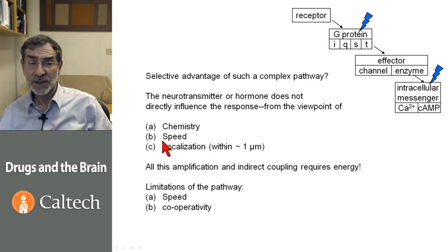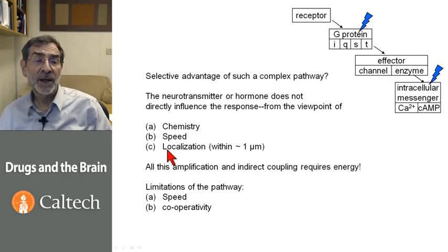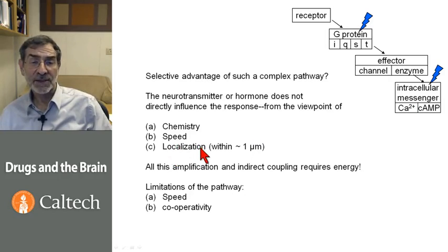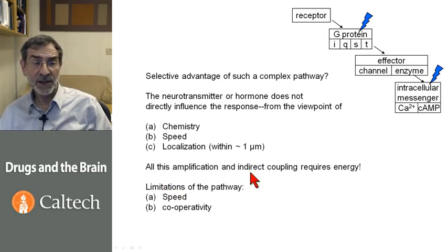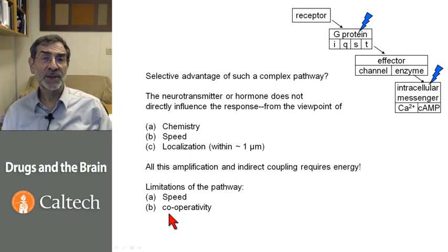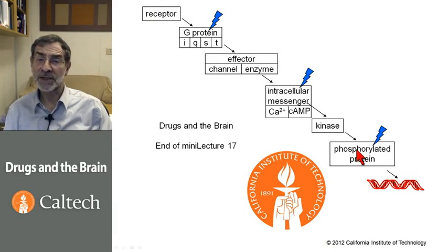There is also a decoupling of speed: the initial agonist binding occurs within milliseconds, but it takes a fraction of a second to get the pathway activated. There is also a decoupling of localization — within about a micron, the ultimate effects are not where the agonist bound to the receptor. All of this means very flexible pathways, but the amplification and indirect coupling require energy, and they limit the pathway with regard to speed and cooperativity. I know of no G-protein coupled receptors that have Hill coefficients greater than one. Next time, we'll delve into additional details of the G-protein pathway.